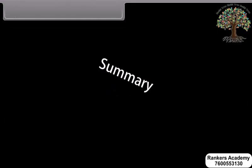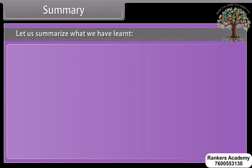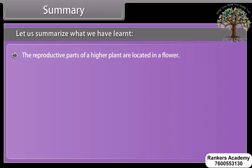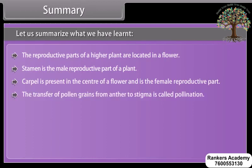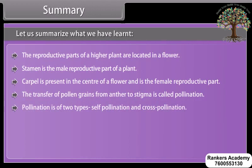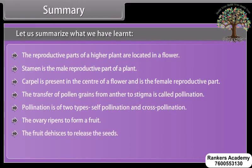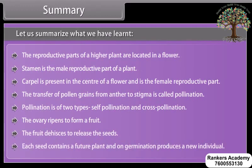Summary: The reproductive parts of a higher plant are located in a flower. Stamen is the male reproductive part of a plant. Carpel is present in the center of a flower and is the female reproductive part. The transfer of pollen grains from anther to stigma is called pollination. Pollination is of two types: self-pollination and cross-pollination. The ovary ripens to form a fruit. The fruit dehisces to release the seeds. Each seed contains a future plant, and on germination, produces a new individual.